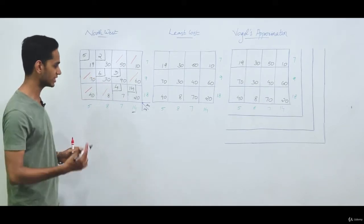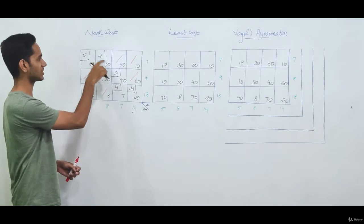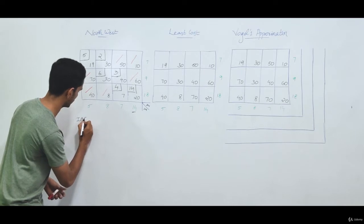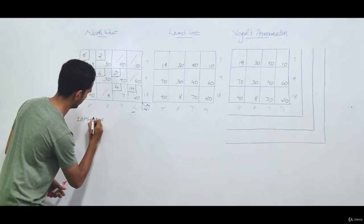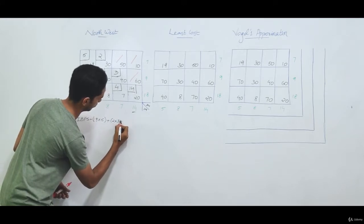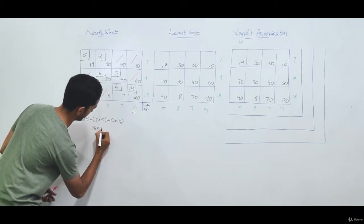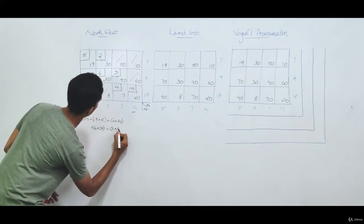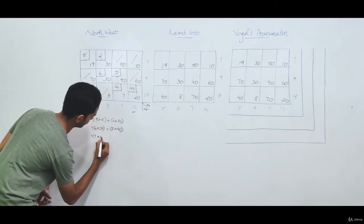Now we find the initial basic feasible solution by taking the occupied cells and multiplying the cost elements with the allocated amounts. The calculation is: 19×5 + 2×30 + 6×30 + 3×40 + 4×7 + 14×40.